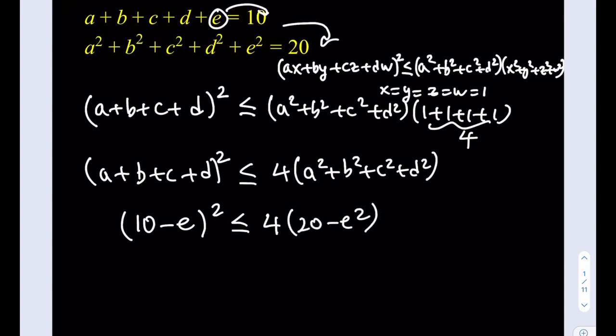So if you go ahead and do those replacements, we basically get an inequality in a single variable. And this is very easy to solve. Well, worst case scenario, it's going to be a quadratic. Let's go ahead and expand it and simplify. 100 minus 20e plus e squared less than or equal to 80 minus 4e squared.